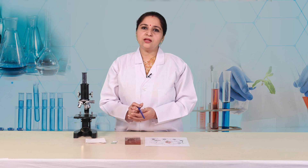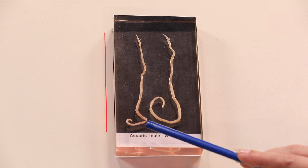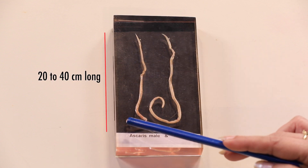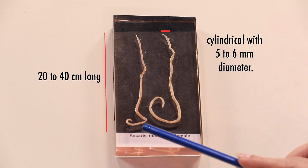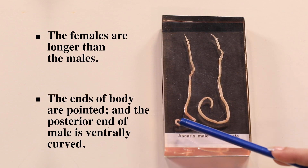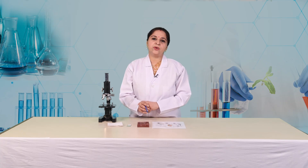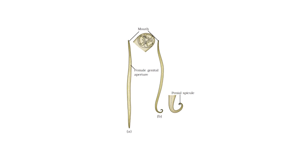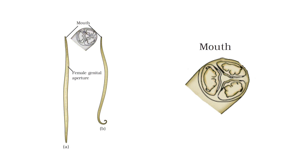Ascaris lumbricoides is commonly called roundworm. The body is unsegmented, about 20 to 40 centimeters long and cylindrical with 5 to 6 millimeter diameter. Sexes are separate; the females are longer than the males. The ends of the body are pointed, and the posterior end of the male is ventrally curved. The mouth is situated at the anterior end and is surrounded by 3 lips — one present mid-dorsally and the remaining 2 situated ventrolaterally. You can view these lips using a magnifying lens.